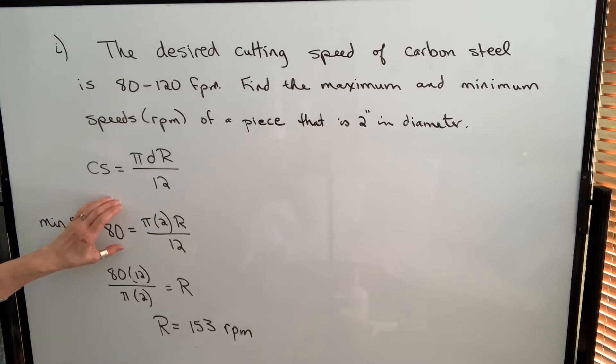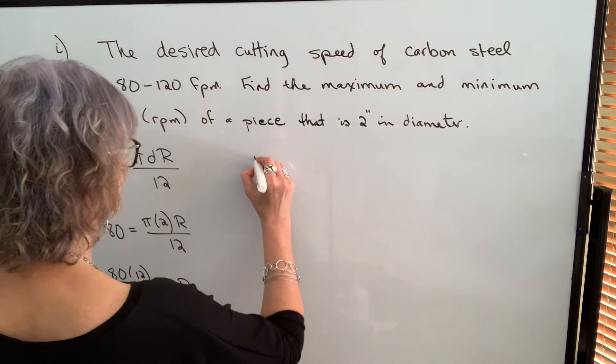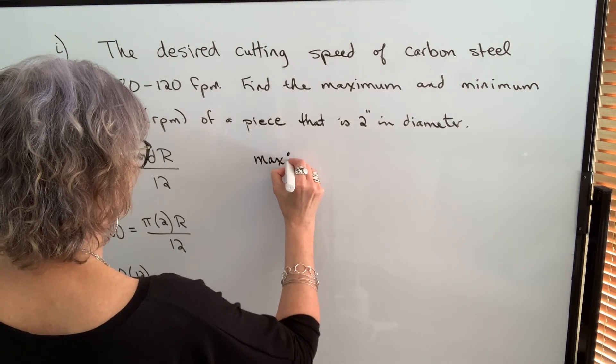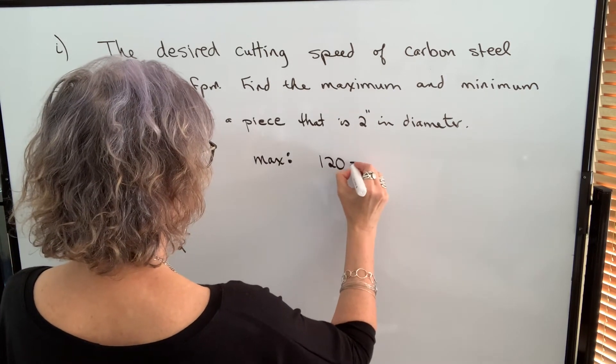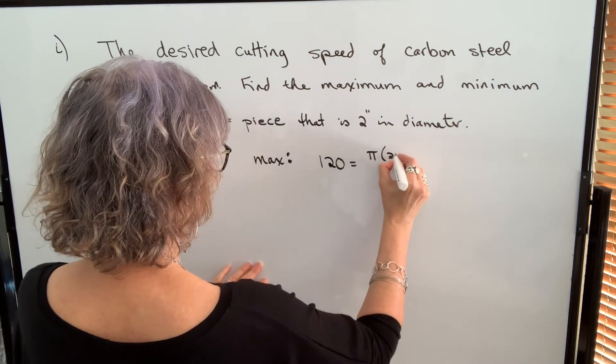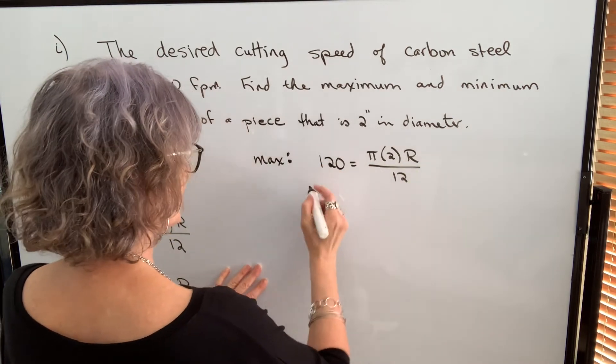Let's use this formula again to find our maximum RPM. So this time I'm going to put 120 in for cutting speed. And I do the same process. I multiply both sides by 12.